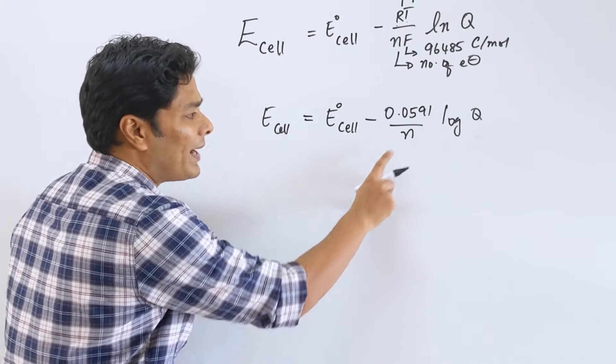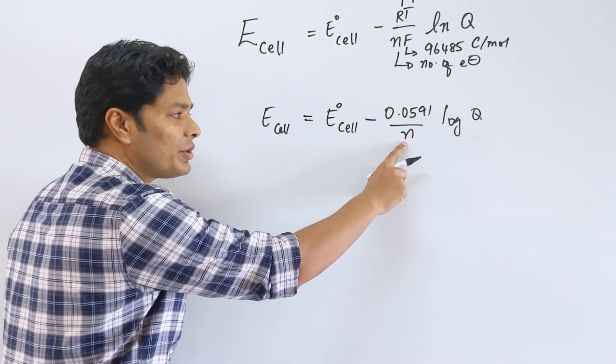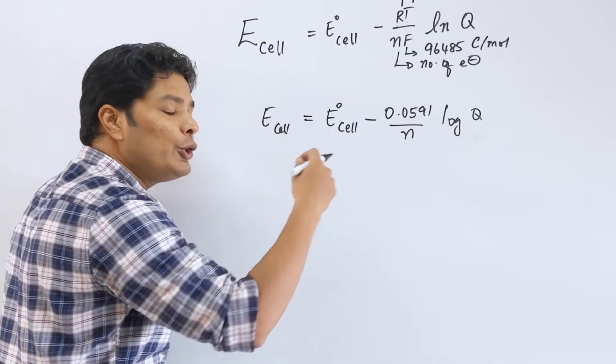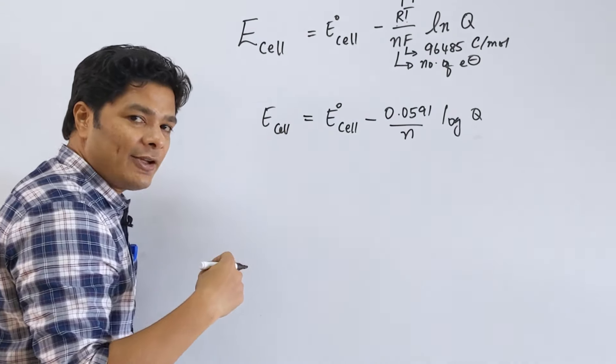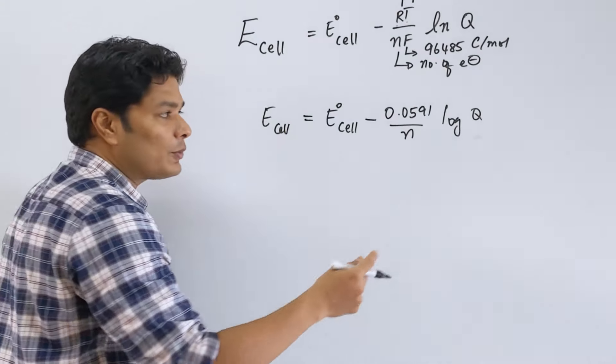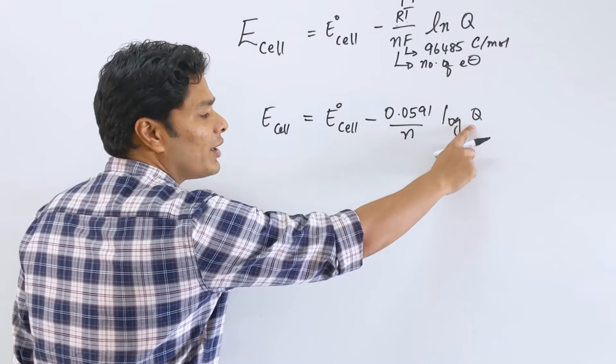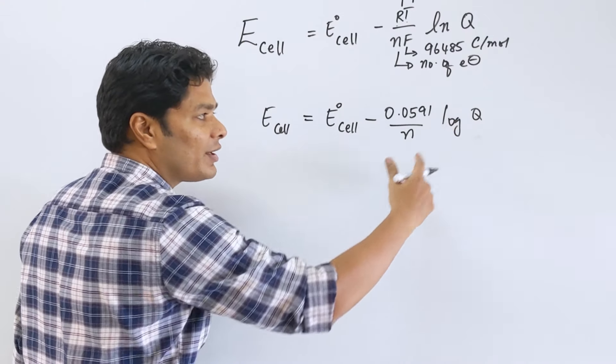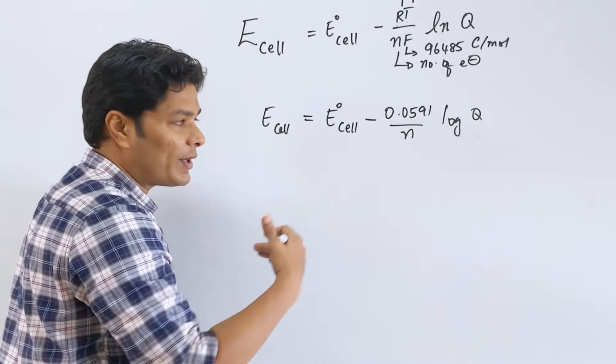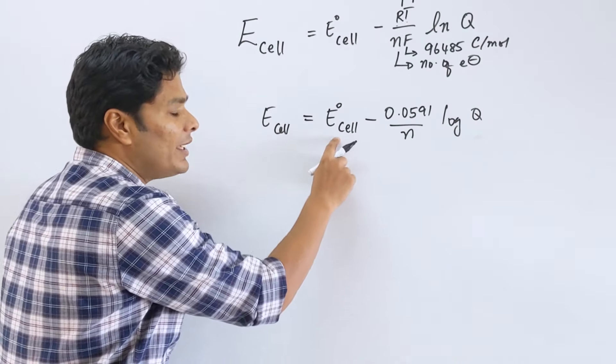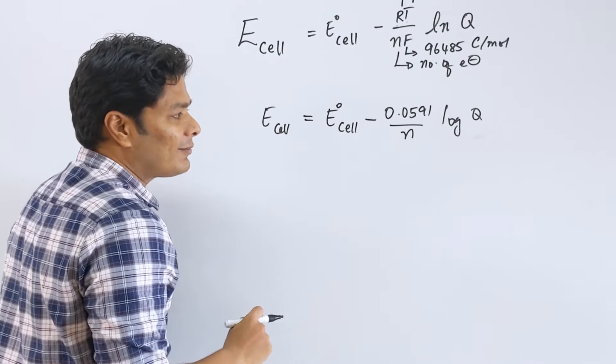A couple of things you want to know: a balanced chemical equation is needed; you need to know exactly which is cathode and which is anode — which is getting oxidized and which is getting reduced — products over reactants. E° cell has to be calculated.